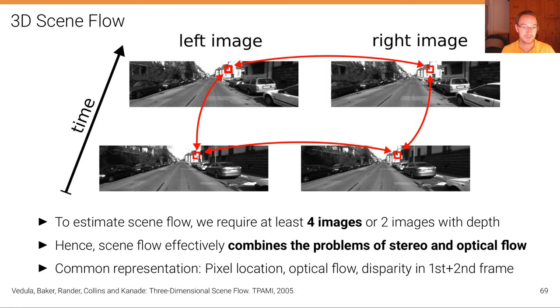And if we can find the correspondences in all of these four images, then we know the 3D location of this point at time t because we have the stereo correspondence of this calibrated stereo rig. But we also have the optical flow and we have the stereo correspondence at time t plus one.